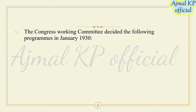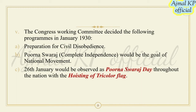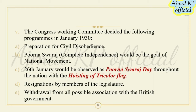The Congress Working Committee decided the following programs in January 1930: complete independence would be the goal of the national movement; 26th January was observed as Purna Swaraj Day with the hoisting of the tricolor flag; resignations by members of the legislature; and withdrawal from all possible associations with the British government.